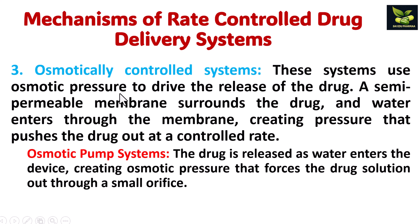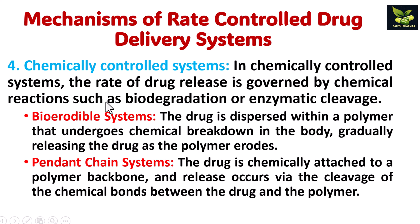Third is osmotically controlled systems, where the main mechanism is osmotic pressure which drives the release of the drug. A semi-permeable membrane surrounds the drug, and water enters through this membrane, creating pressure that pushes the drug out at a controlled rate — an example is osmotic pump systems. Fourth is chemically controlled systems, where chemical reactions such as biodegradation or enzymatic cleavage are the main mechanisms. Types include bioerodible systems and pendant chain systems. In pendant chain systems, the drug is chemically attached to a polymer backbone and released via cleavage of chemical bonds.